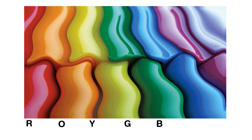Let me take you back to elementary school with the following example: Roy G. Biv — Red, orange, yellow, green, blue, indigo, violet. Yep, these are the colors of the rainbow.